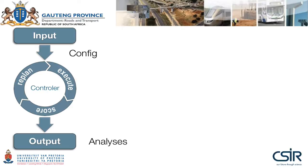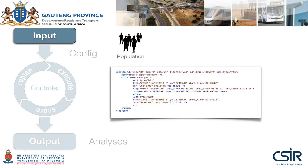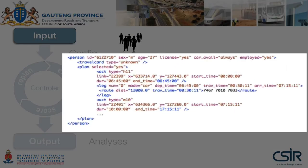For starters, you will need a synthetic population of agents — a bunch of people that represents the population, both in terms of their demographics and travel demand. Each agent must at least have a single plan that indicates the sequence of activities, with each pair of activities linked by a leg. All the information is stored in XML format. Here you see a person, number 6122710 — a male, 27 years old, who owns a license, has a car available, and is employed.